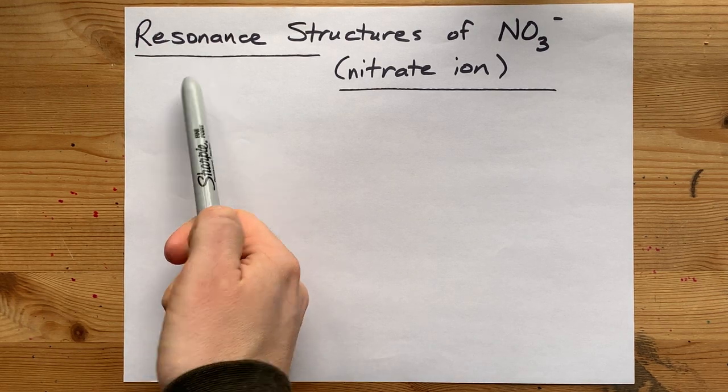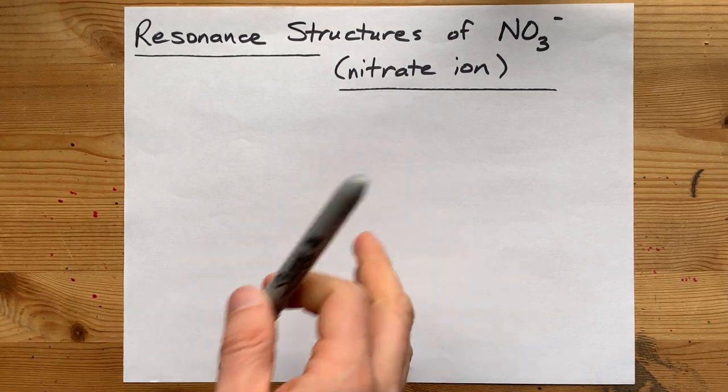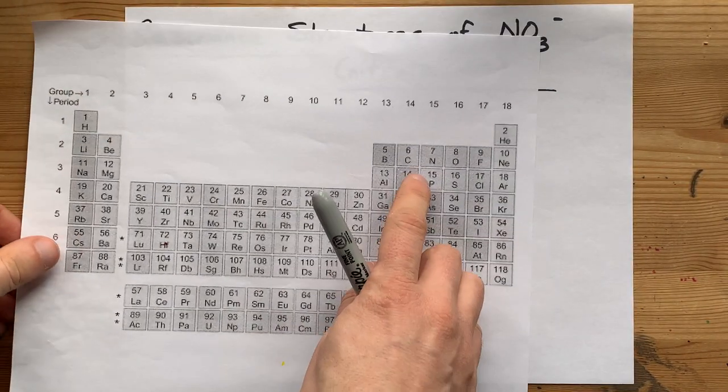We're going to quickly draw the resonance structures of the NO3- or nitrate ion. First, we're going to try to draw the Lewis structure on its own.